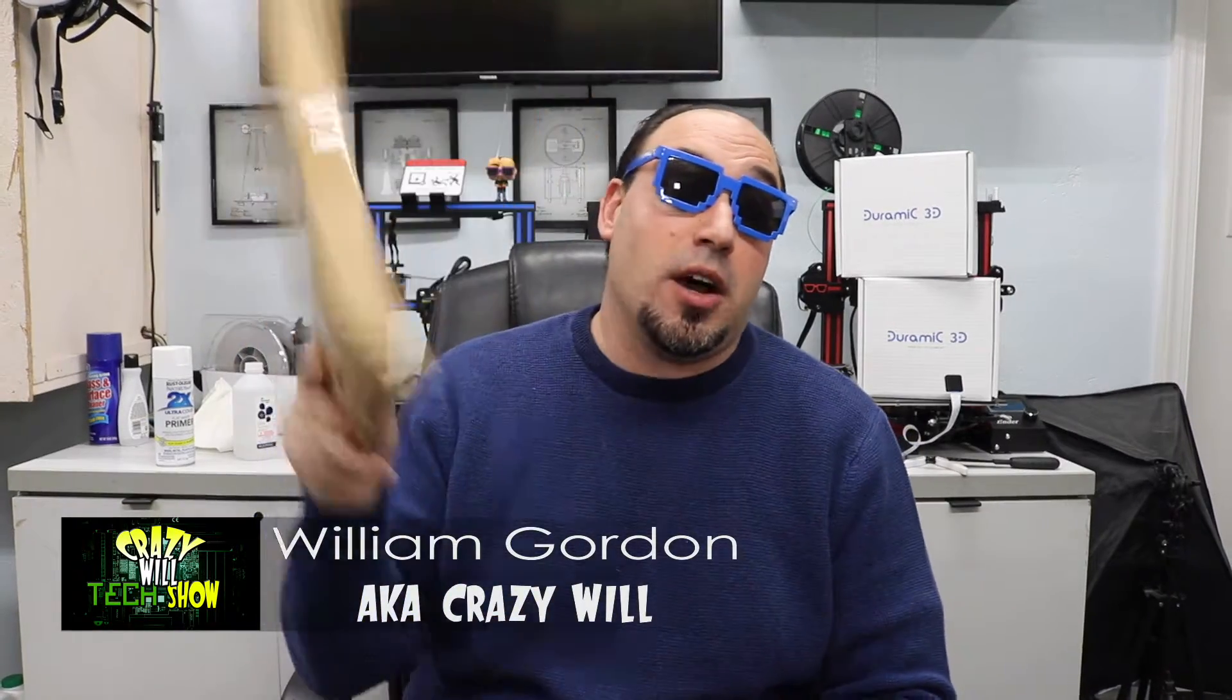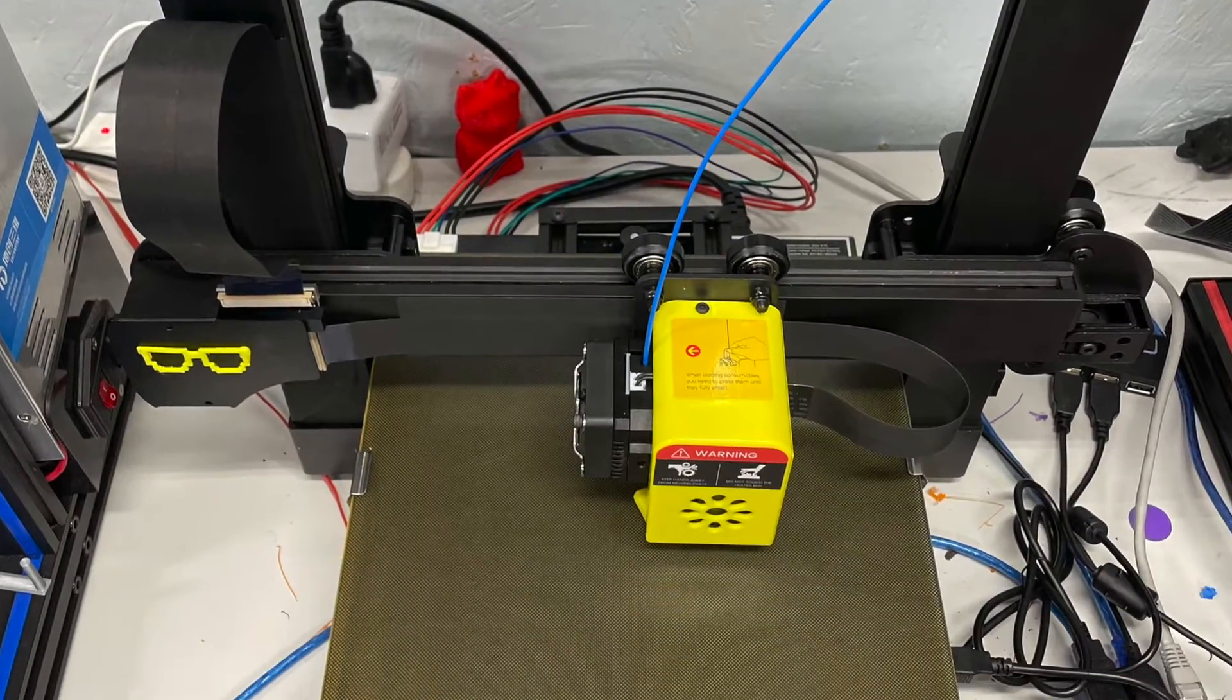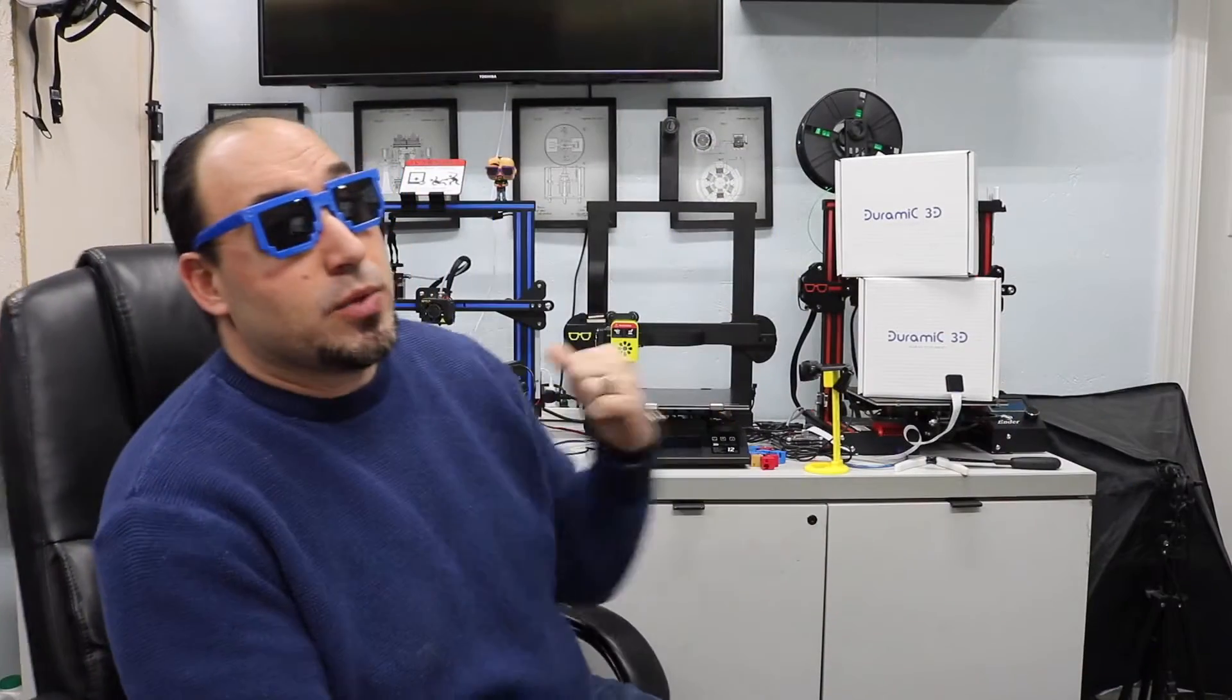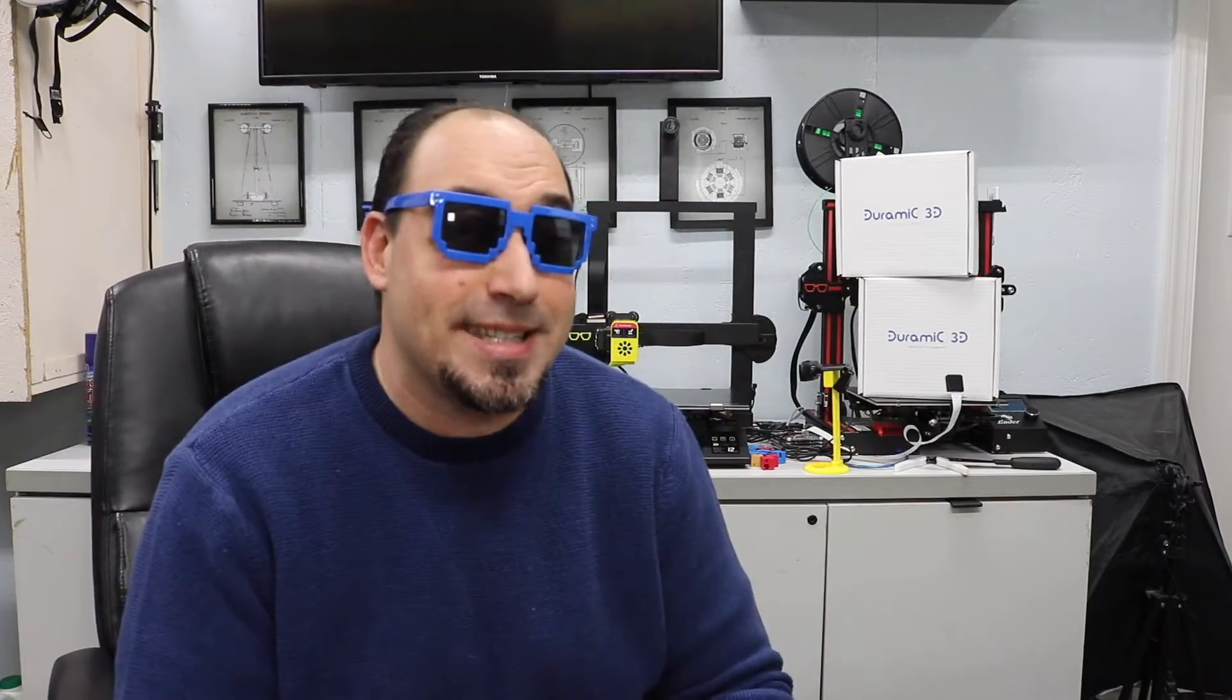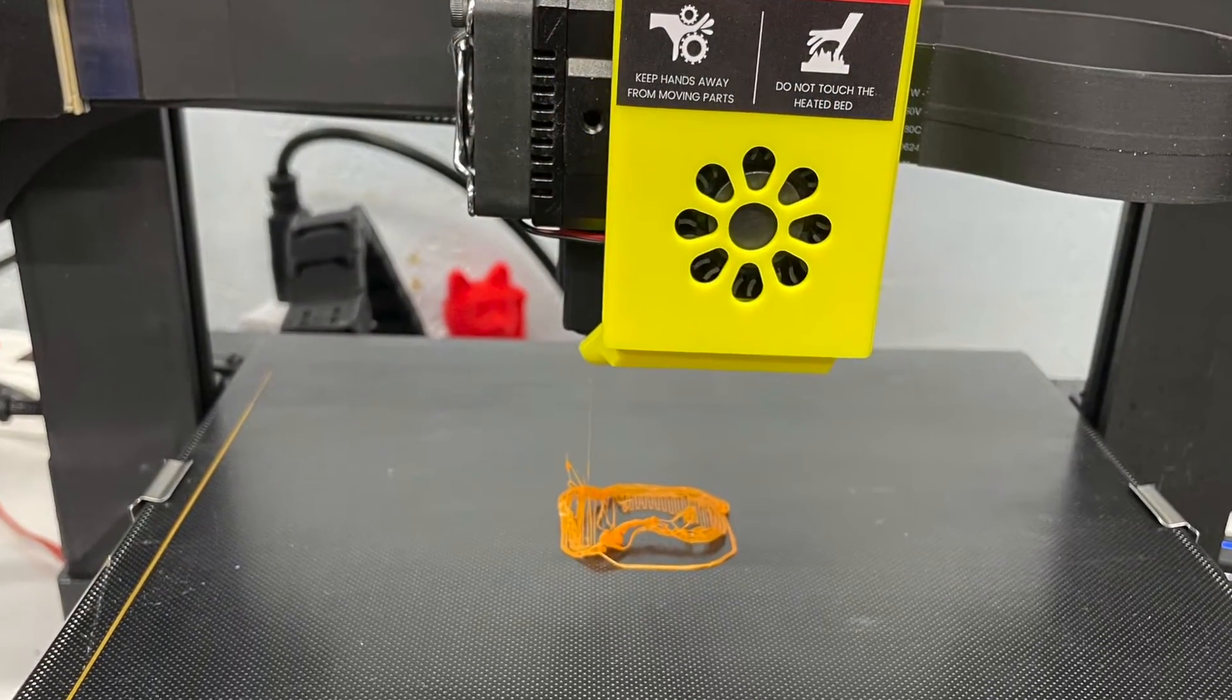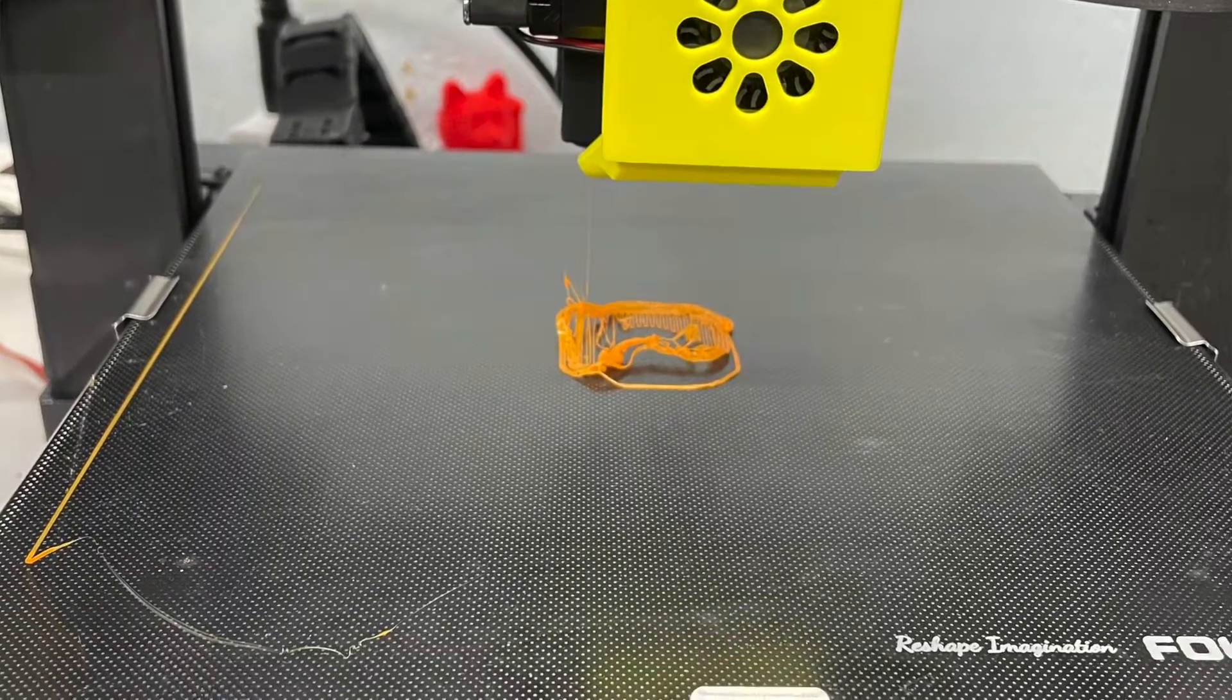Hey! Crazy Will here from Crazy Will's Tech Show. Today, we're going to change out the bed on my Focus Odin 5 F3 3D printer. If you've been following along with my channel, you know I'm having a problem with this 3D printer. It's not printing correctly. I'm having problems with adhesion on the bed, and basically the middle of the 3D printer is too high.